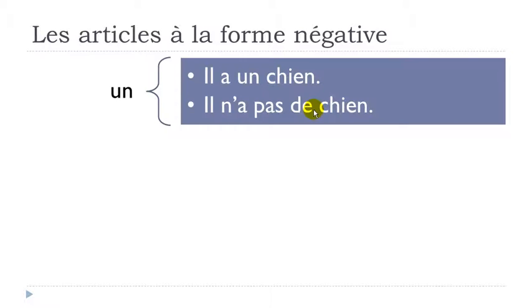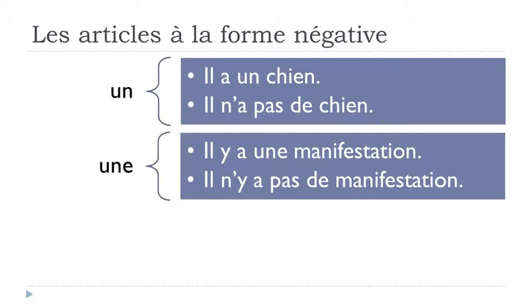That's the first thing to keep in mind with articles indéfinis: when you put the sentence in the negative form, 'un' becomes 'de.' Now the feminine form: 'une.' Il y a une manifestation — there is a demonstration. In the negative form: il n'y a pas de manifestation.